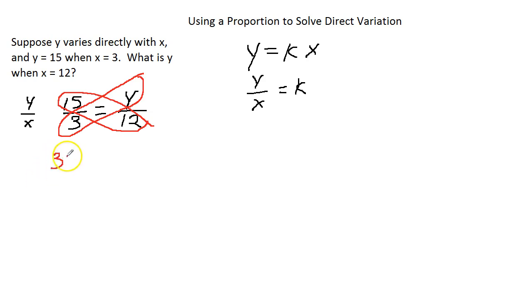3 times y is 3y. 15 times 12. We take that and put it in our calculator, and we get 3y equals 180.